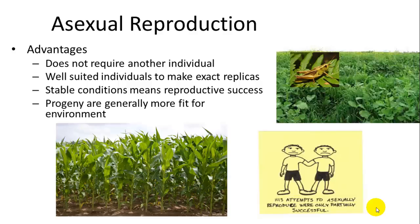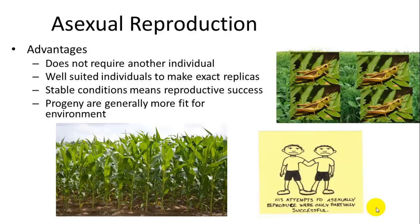For example, a grasshopper finds an ecosystem full of grass and is really good at eating it. It can produce a bunch of clones of itself, and all of the clones will be good at eating the grass as well.